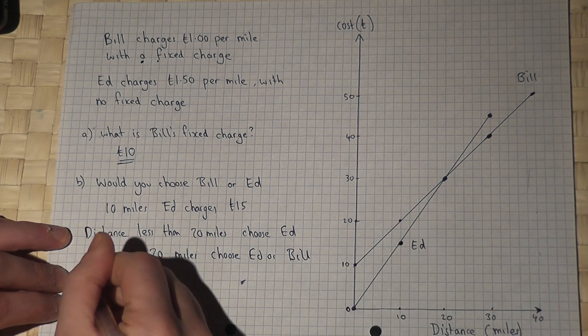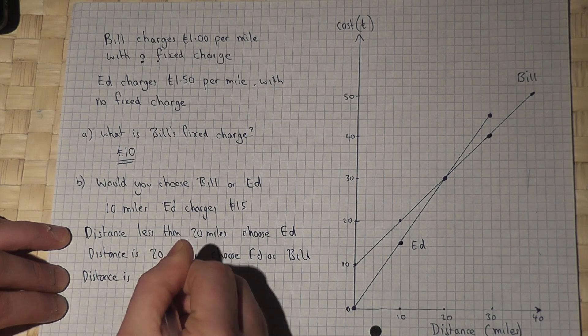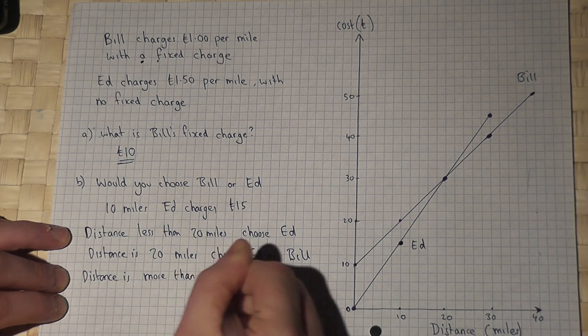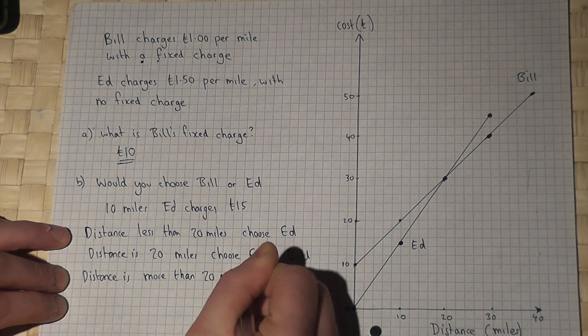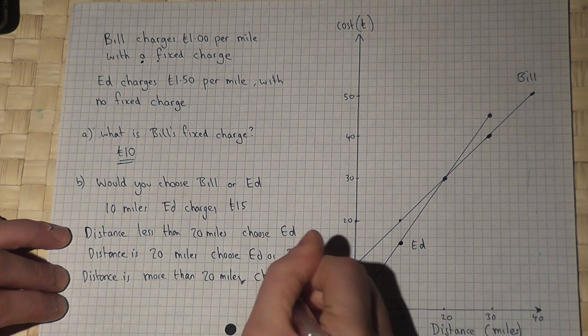But if the distance is more than 20 miles, then Bill's graph is lower, so we would choose Bill.